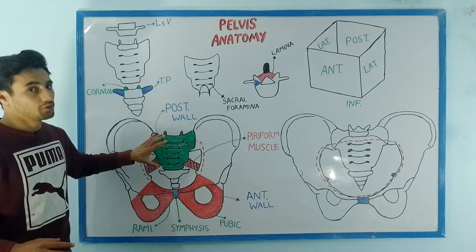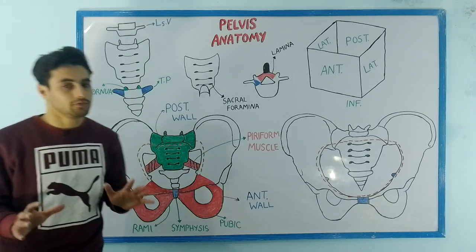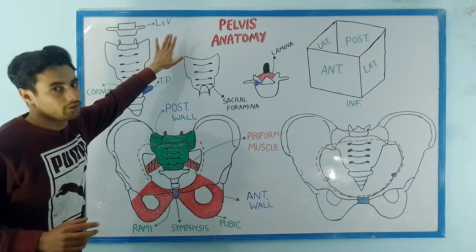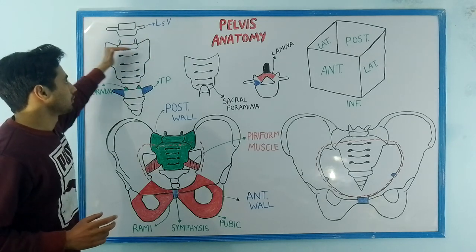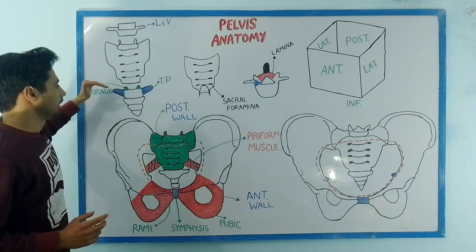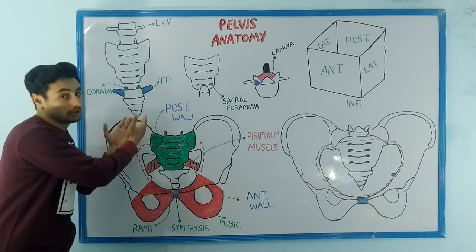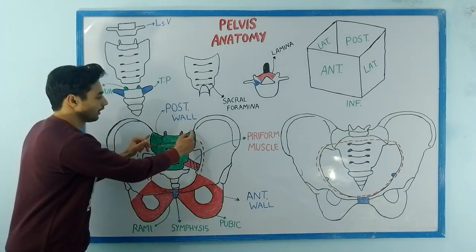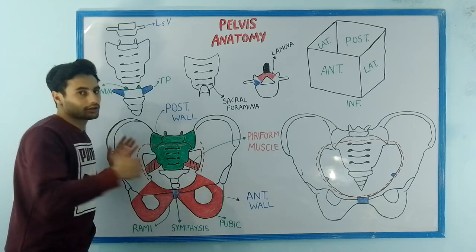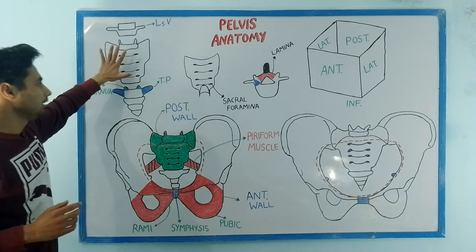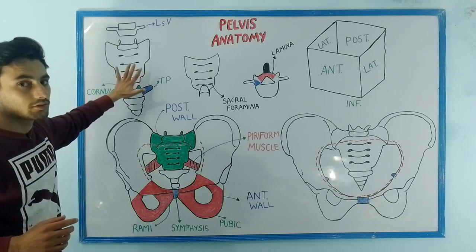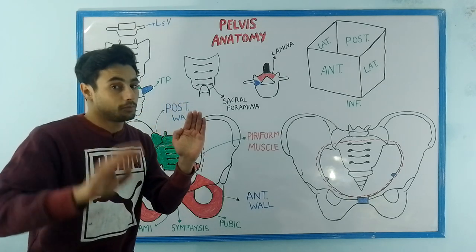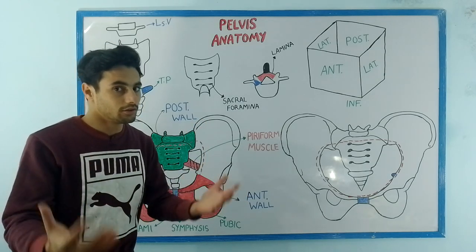Now let's take out this sacrum bone and study some of the important bony features. The sacrum bone will articulate with the last lumbar vertebra at its upper broad base. Inferiorly, it will articulate with the triangular-shaped coccyx bone. Laterally, the sacrum bone will articulate at the sacroiliac joint with the iliac bones. If you look at the anterior portion of this sacral bone, it has a concavity which will have four pairs of sacral foramina through which the nerves will pass.